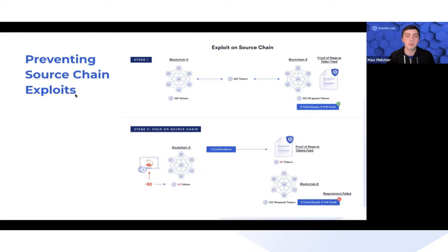With proof of reserve, we're relaying the amount of tokens locked up on Blockchain A at all times. Assuming you're checking the token supply against the PoR feed, the token supply should always be less than or equal to the PoR feed for that wrapped or bridged asset.